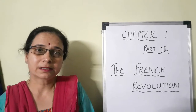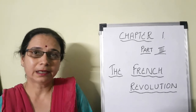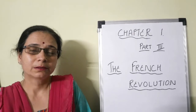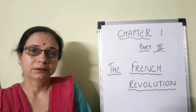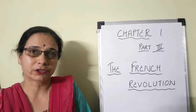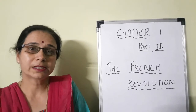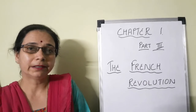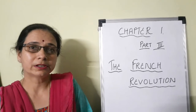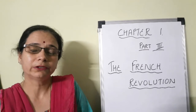In the previous classes we studied Part 1, in which we studied about how Louis XVI came into effect, what was his family background, and how he was engaged in long wars and emptied his treasury. In the second part, that is in the previous class, we studied how he divided French society into three estates: Nobles, clergy, and the third estate.